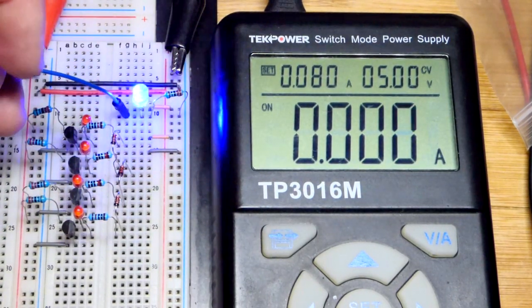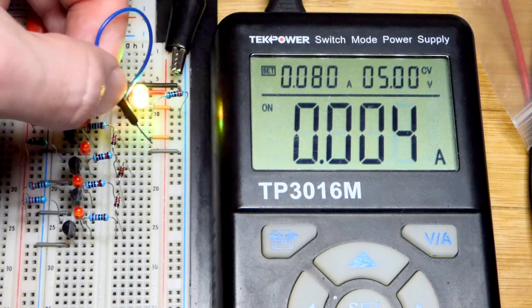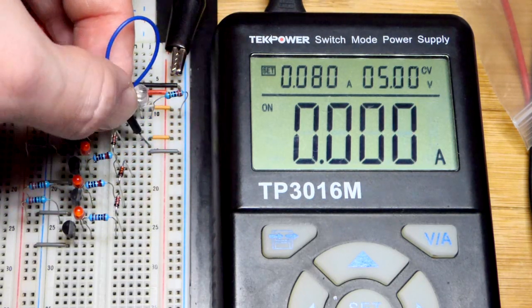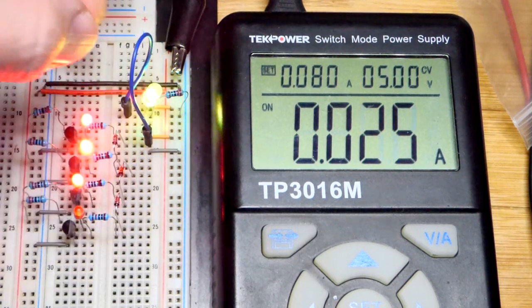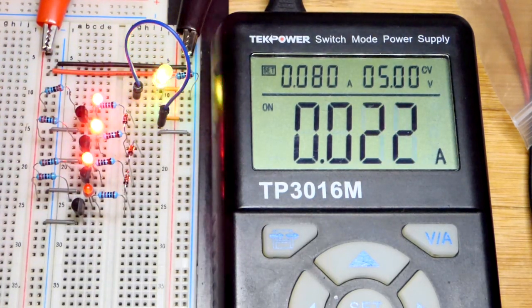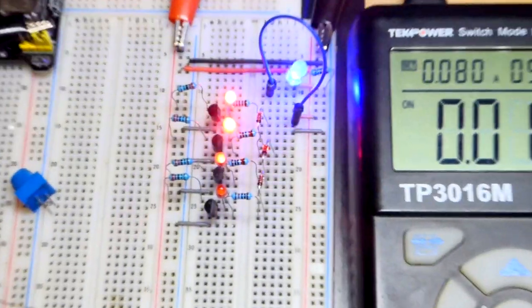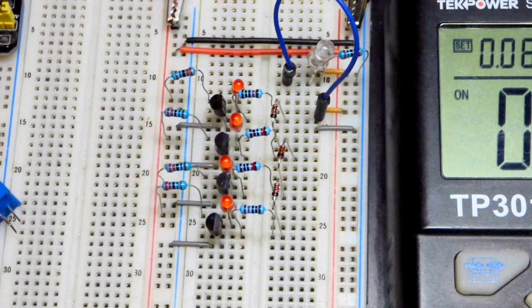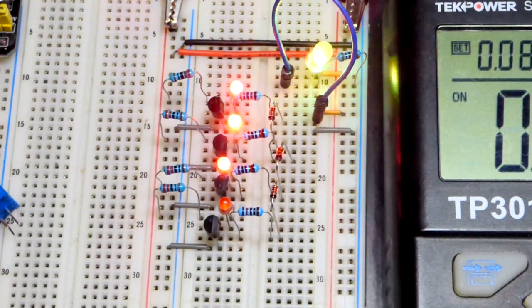So 220 ohm resistor to the negative supply right there, and we're gonna put it to where the middle pin of the trim pot was, that was our output voltage. And now you can see that we have the LEDs turn on based on the voltage at that point right there.